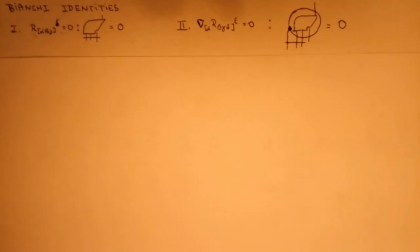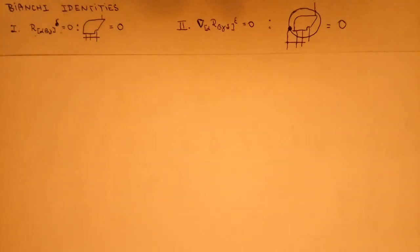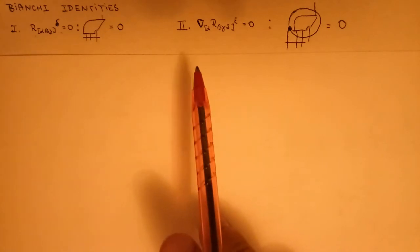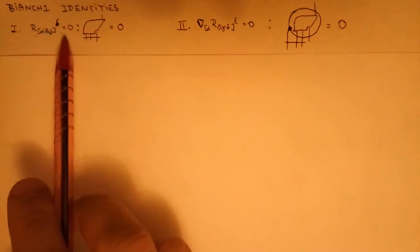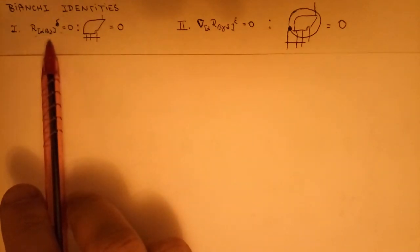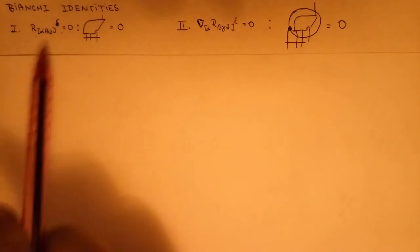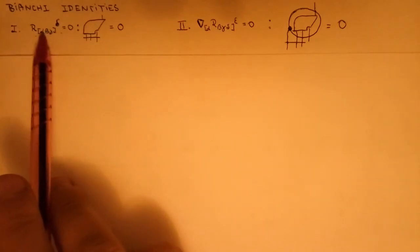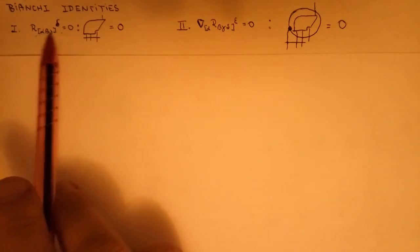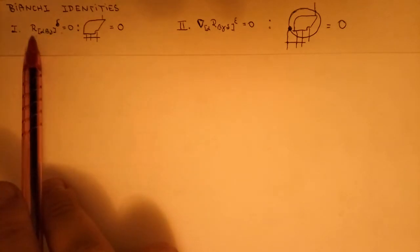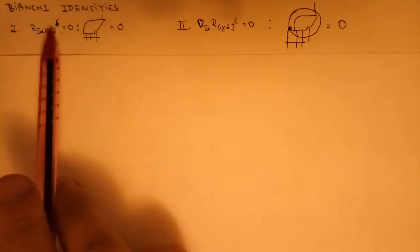Hello! Today in this video I will show you how to derive the famous Bianchi identities. The first Bianchi identity states that anti-symmetrization in the first three indices of the Riemann tensor gives zero.